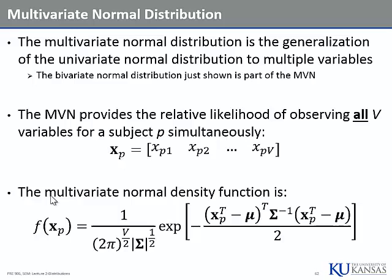The vertical bars on either side of sigma represent the determinant of the matrix. The determinant is a one-number characterization of a square symmetric matrix, and it tells you whether or not you can invert the matrix. If the determinant is positive, the matrix is said to be positive definite — which means you can invert it. The determinant appears in the denominator, so it cannot be zero; a zero determinant means the matrix is positive semi-definite.